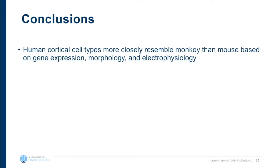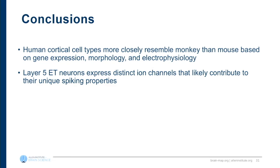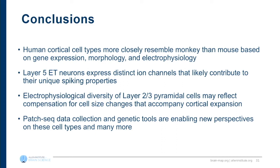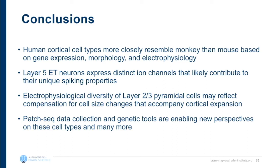To wrap up: human cortical cell types generally more closely resemble monkey than mouse, based on multiple modalities — gene expression, morphology, and electrophysiology. We've shown a unique layer 5 type expressing distinct ion channels contributing to unique spiking properties. The diversity of layer 2-3 pyramidal cells unique to human may reflect compensation for cell size changes that accompany cortical expansion. Looking forward, continued patch-seq data collection and new genetic tools will enable many more cross-modality comparisons and unified functional pictures for these differences.